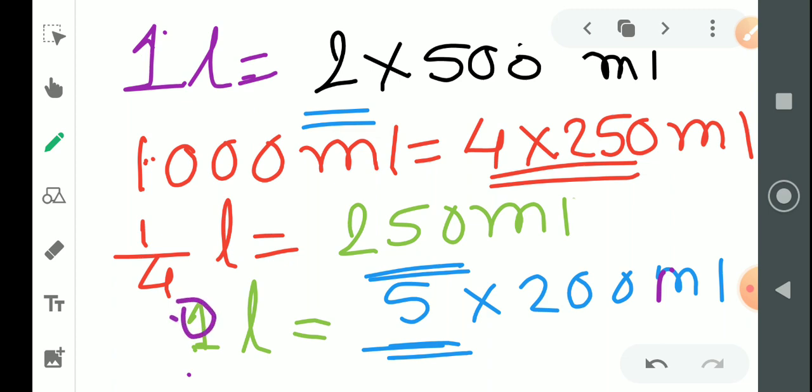One fourth liter is equal to 250 ml. 1 liter is equal to 200 into 5.